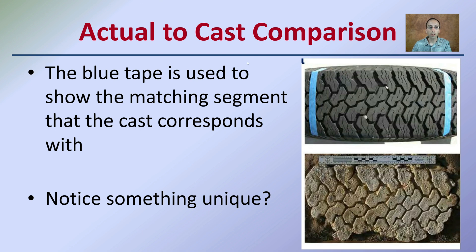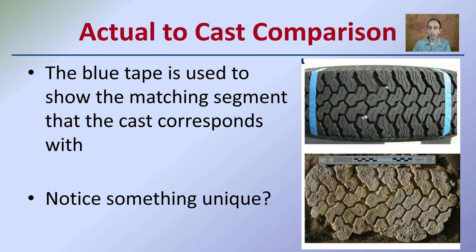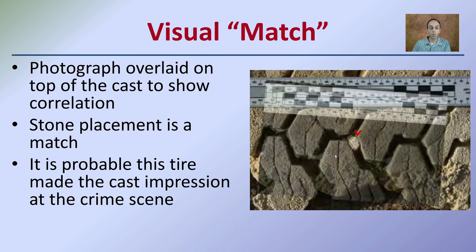For the actual-to-cast tire comparison, blue tape is used to show the matching segment that the cast corresponds with, because the cast is only going to be a small portion of the tire. We're trying to determine where it falls within the tire. When looking closely at the visual, a photograph overlaid on top of the cast shows a correlation where a stone placement is an exact match. You can see stones caught in the tire, and looking carefully, that stone also shows up on the cast. When overlaying those two, it is very probable that this tire made the cast impression at the crime scene — these individual characteristics, such as the stone matching the cast and the original tire, indicate it's very likely this tire made the impression found at the crime scene.